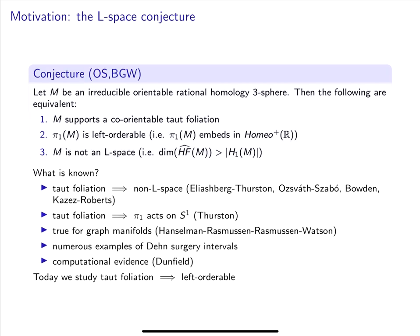The study of taut foliations and left orderings goes back to work of Thurston and Caligari and Dunfield in the late 90s, but there has been renewed interest in recent years due to the L-space conjecture popularized by Boyer, Gordon, and Watson.